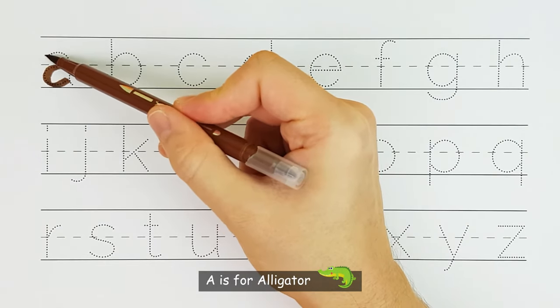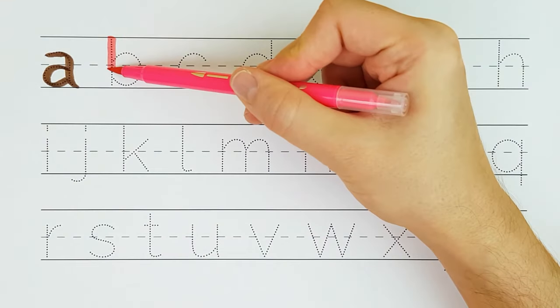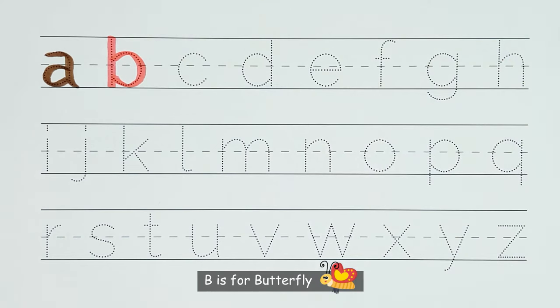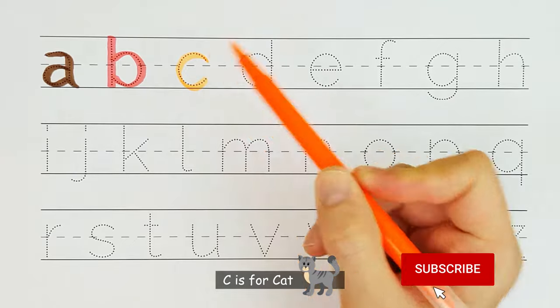A. A is for alligator. A. B. B is for butterfly. B. C. C is for cat. C.